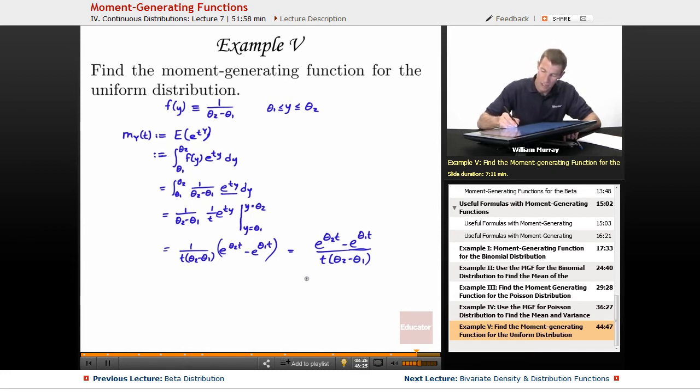Notice that this is a function of t now. There are no y's anywhere. That is what is supposed to happen with a moment generating function. It should always be a function of t. It should not have any y's anywhere in there. So, this is my complete answer here. And I'm done with that example, except for maybe a quick recap of the steps there.